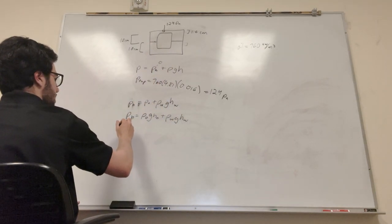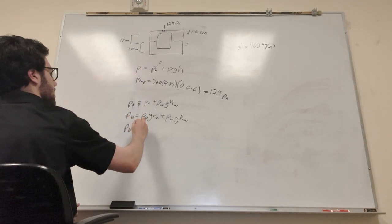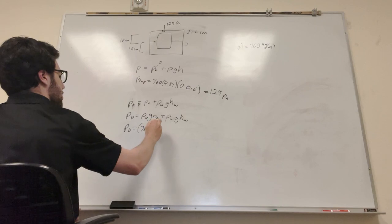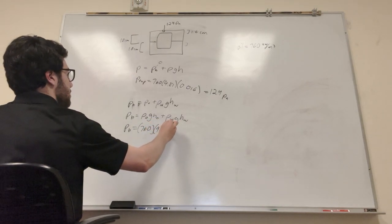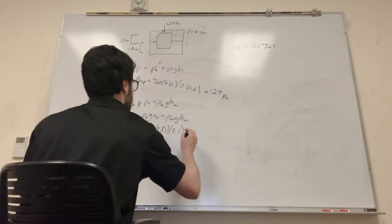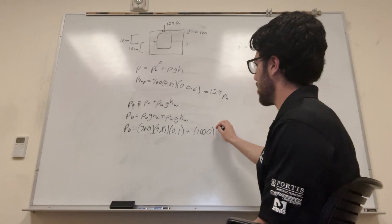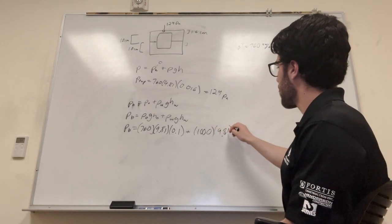So this is gonna end up giving us, as you can put in this, so the density of oil, 760 again, times gravity, 9.81 times the height of it, which is 0.1 meter, plus density of water, which is 1,000. That's just something you should know, 9.81 times the height.